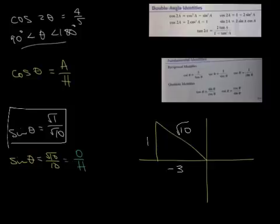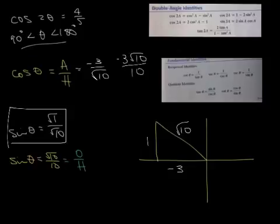So my cosine is adjacent over the hypotenuse. And if I rationalize, I end up getting negative 3 square root of 10 over 10 for my cosine of theta.